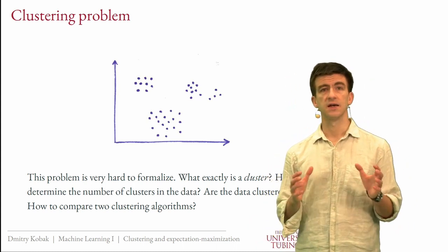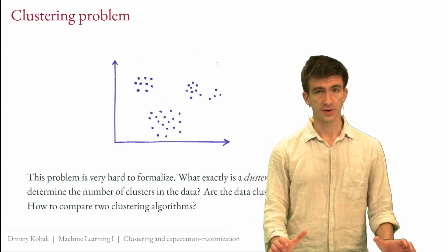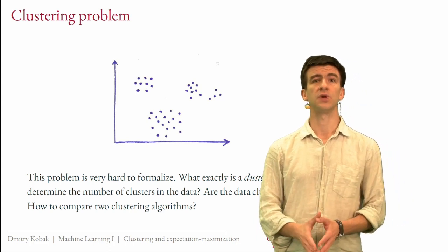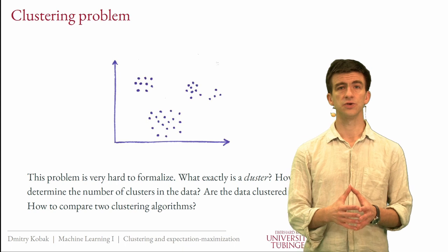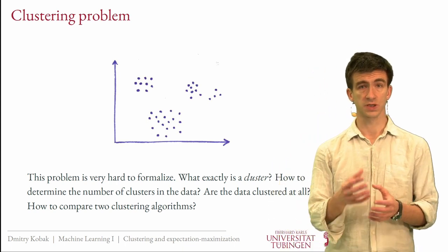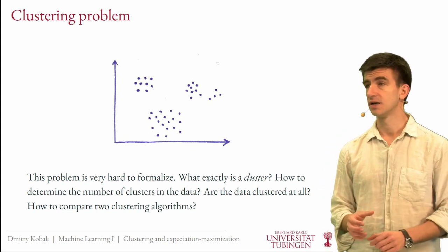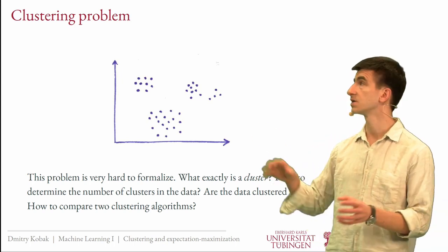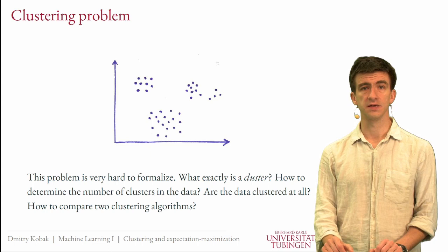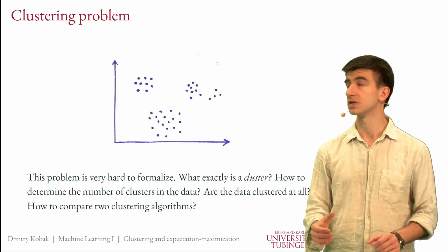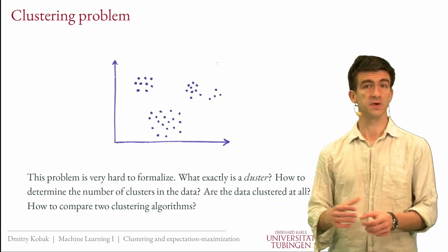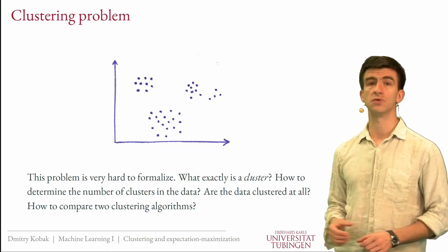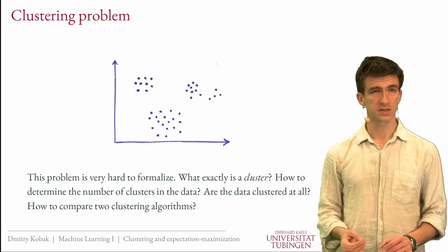It turns out that the clustering problem is actually a very difficult, very complicated problem, and it starts with even formalizing it. What does it mean to cluster the data? What is the definition of a cluster? It is very, very hard to say what captures our human intuition about what a cluster is. Even human observers might disagree about whether something is one cluster or two clusters, and so this is hard to formalize.